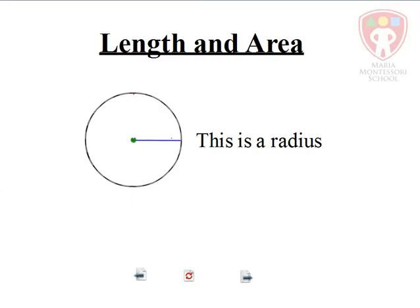Length and area. Let's remind ourselves what a radius is. A radius is, of course, a line from the center of the circle to any point on the circumference of the circle. That is a radius.